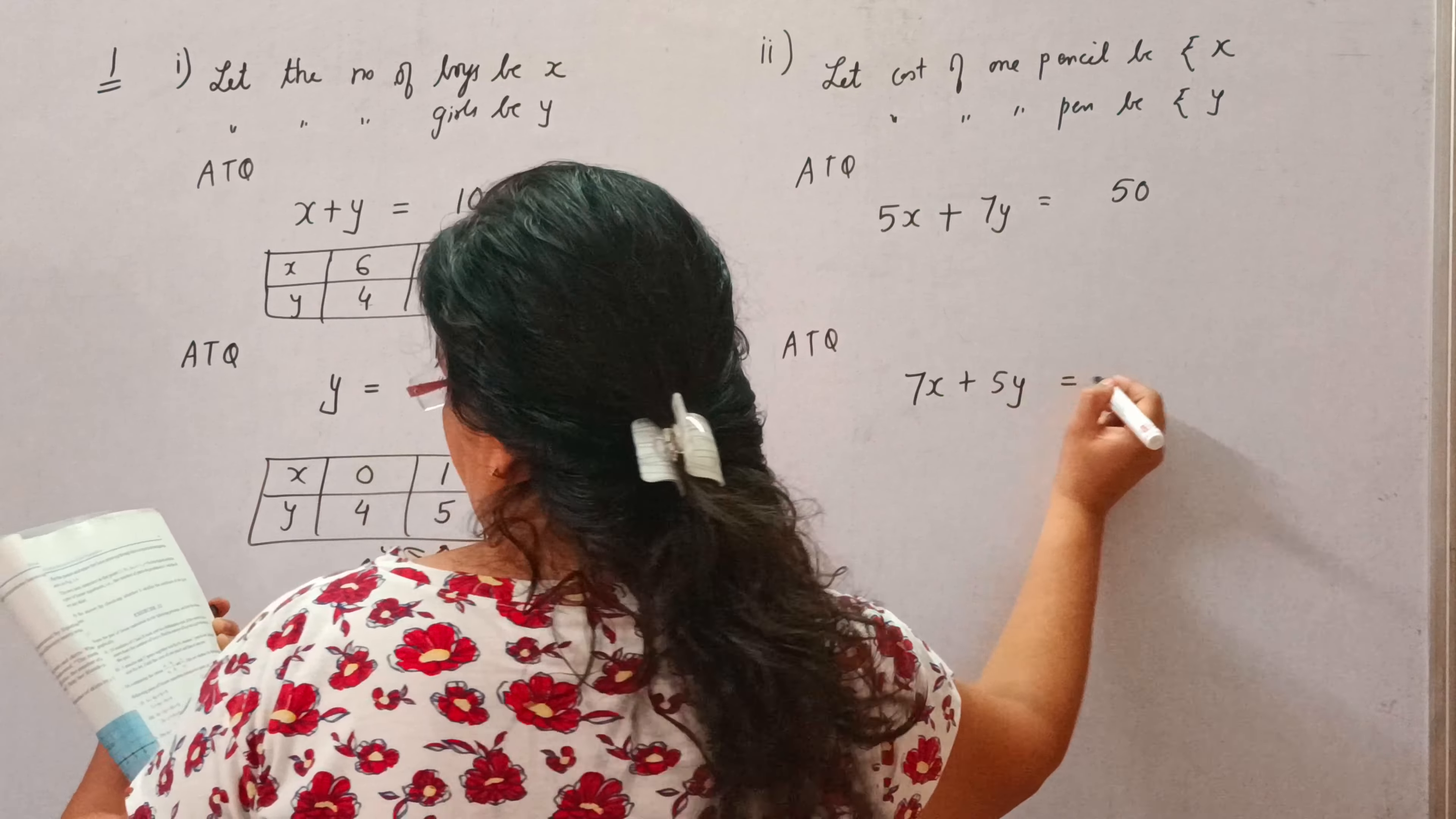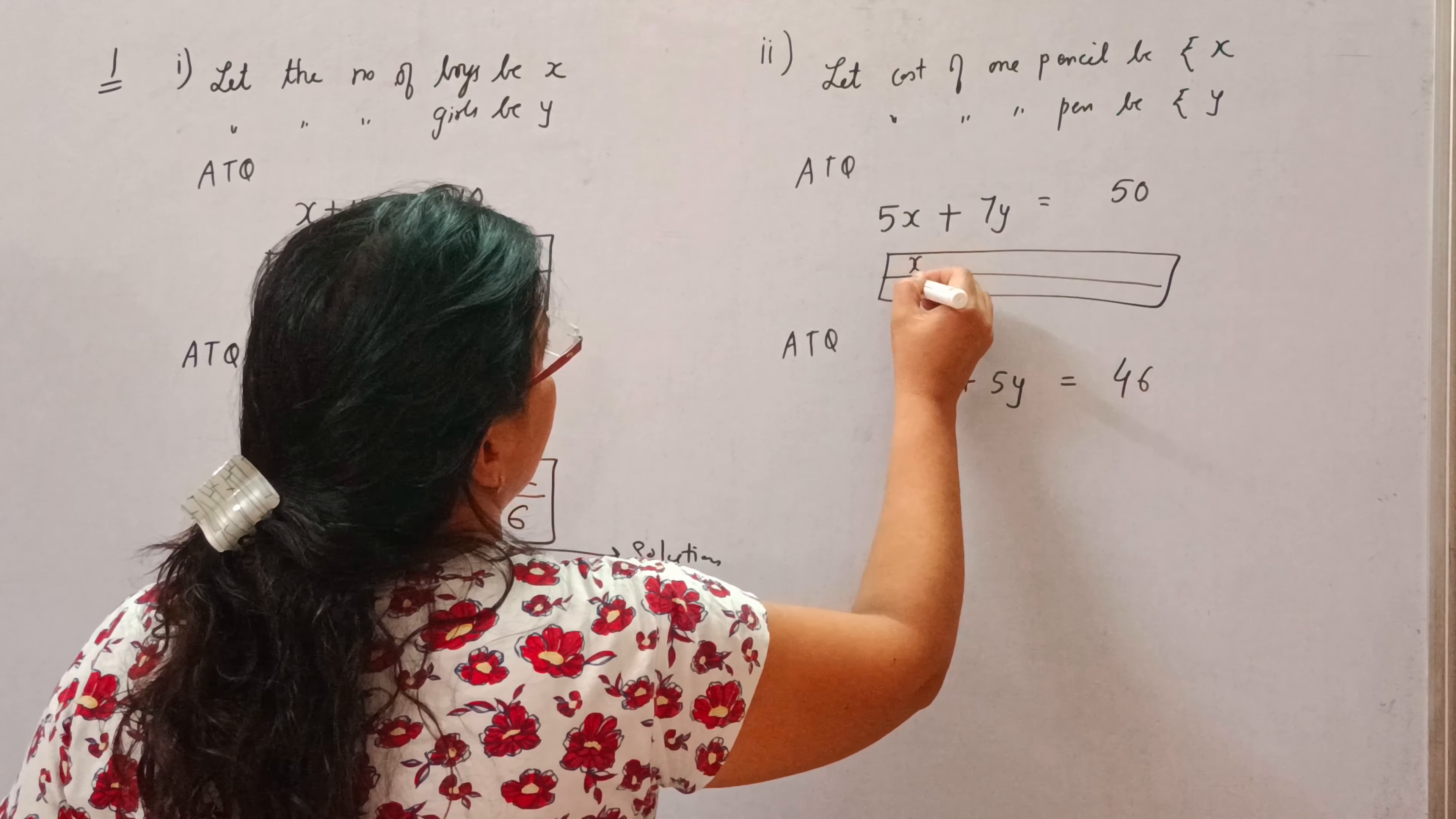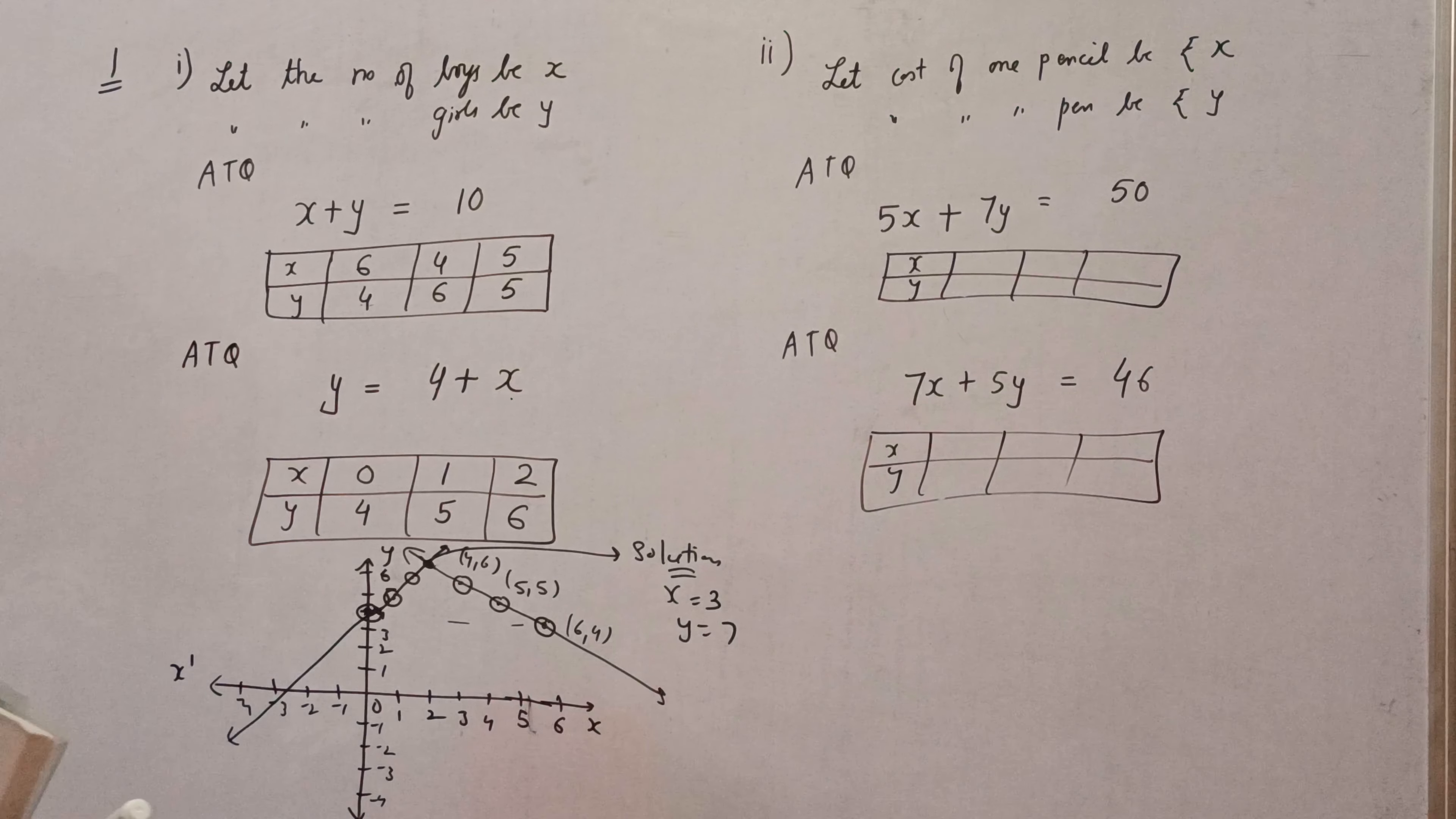So, these are the two equations. And in the same way, you can draw the table. You can find the solution. Any three solution you can find for these two equations. And then, you can draw the graph like we have drawn in part number 1. So, you can do this question yourself. Try to do yourself.